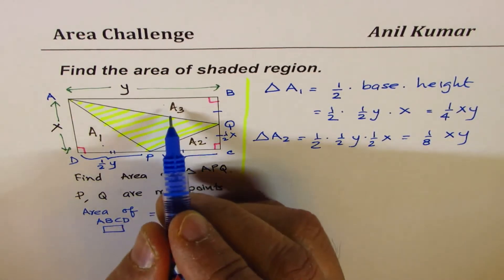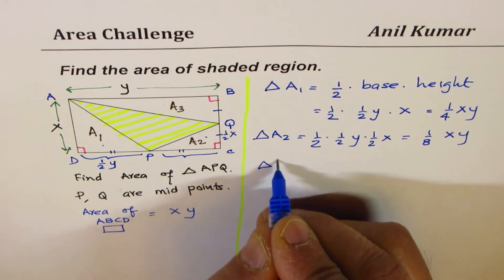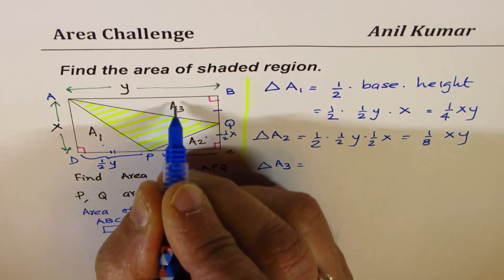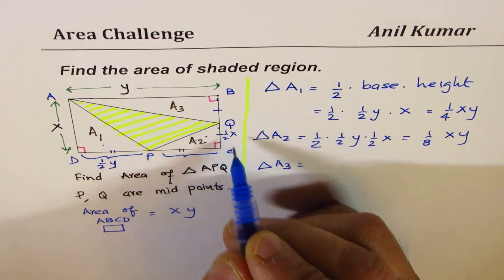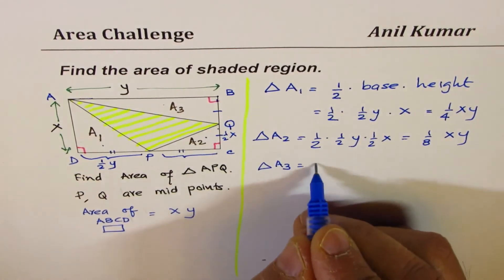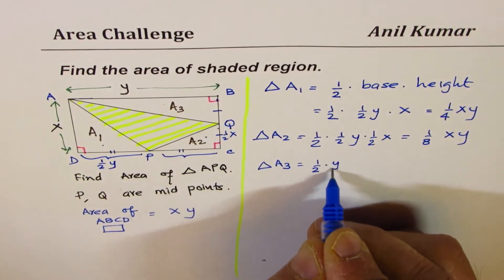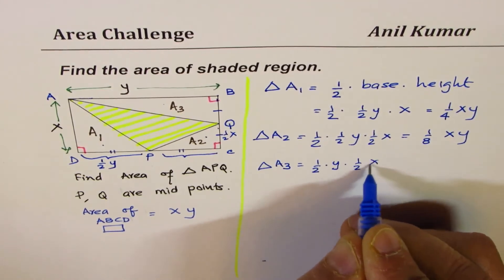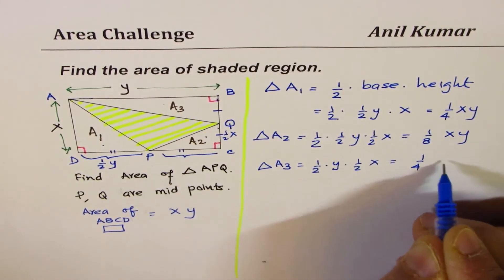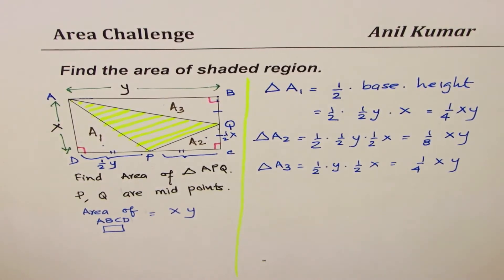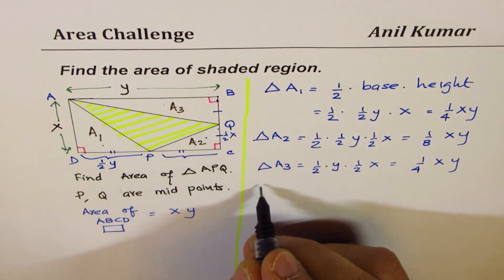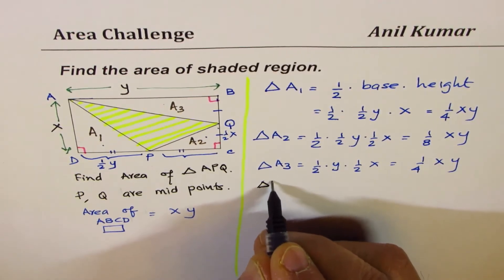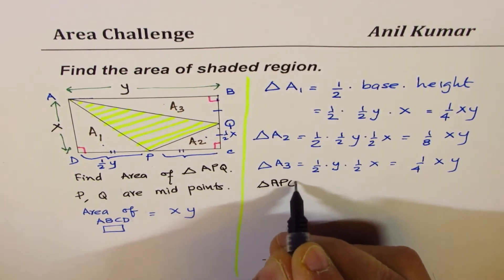For triangle A3, base is Y and height is half of X. So the area is half times Y times half of X, that gives us 1/4 of XY. Right, of this triangle.